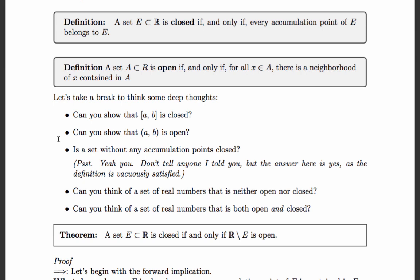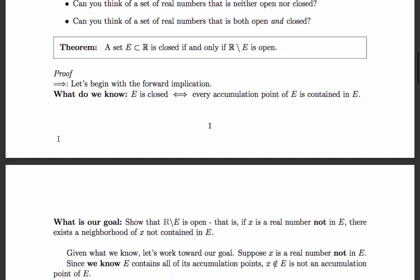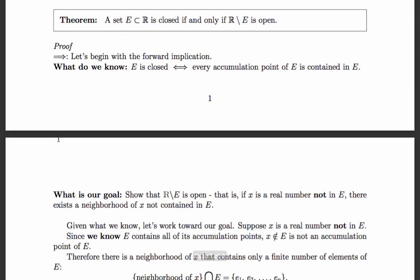A subset E of the real line is closed if and only if its complement is open. Let's prove the statement. We'll begin with the forward implication: assume closed, prove the complement is open. We know E is closed — in other words, every accumulation point of E is contained in E. Our goal is to show that the complement of E is open.